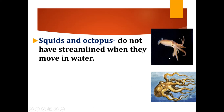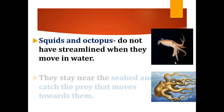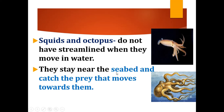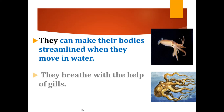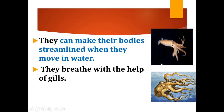Squids and octopuses do not have a streamlined body when they move in water — they have an entirely different structure. They stay near the seabed and catch prey that moves towards them. When moving, they can make their bodies streamlined. They breathe with the help of gills.